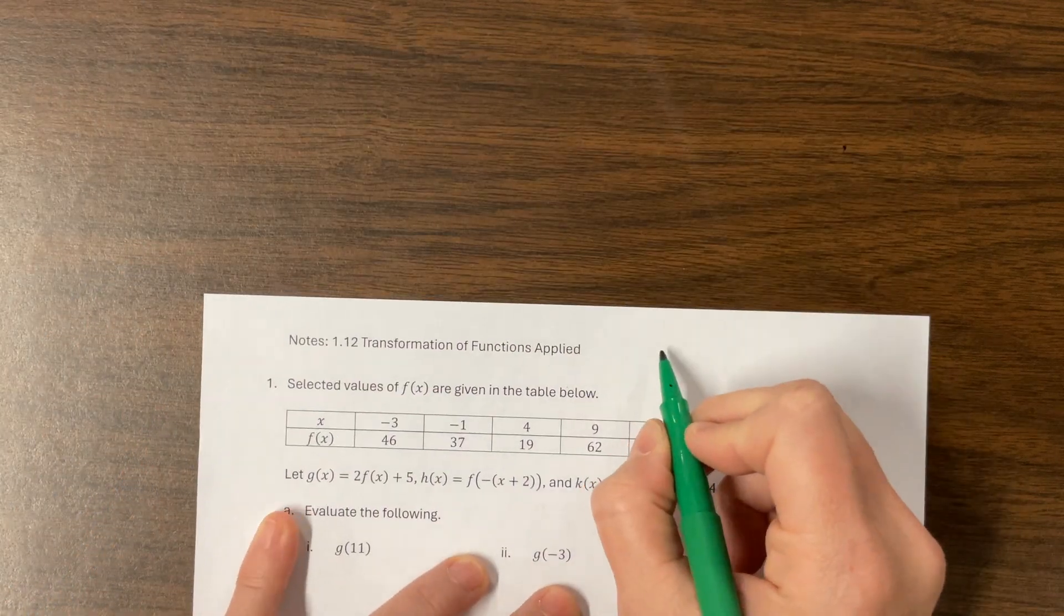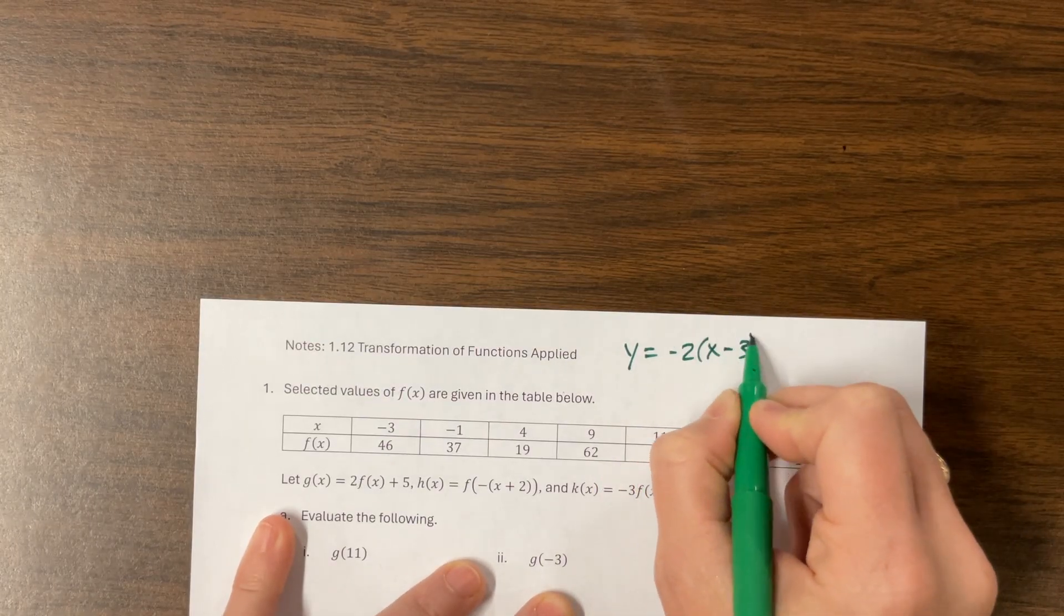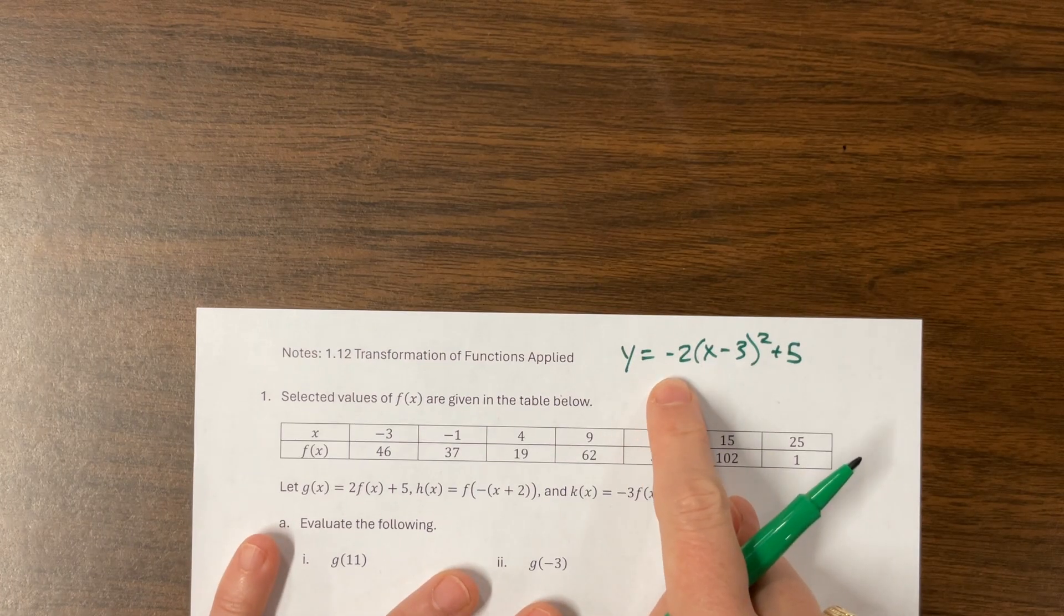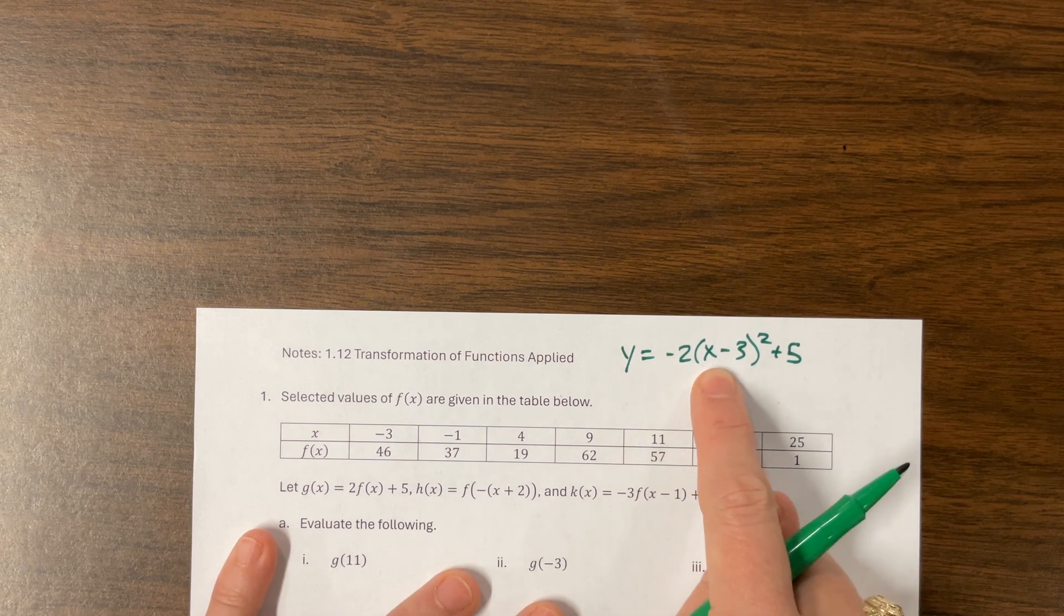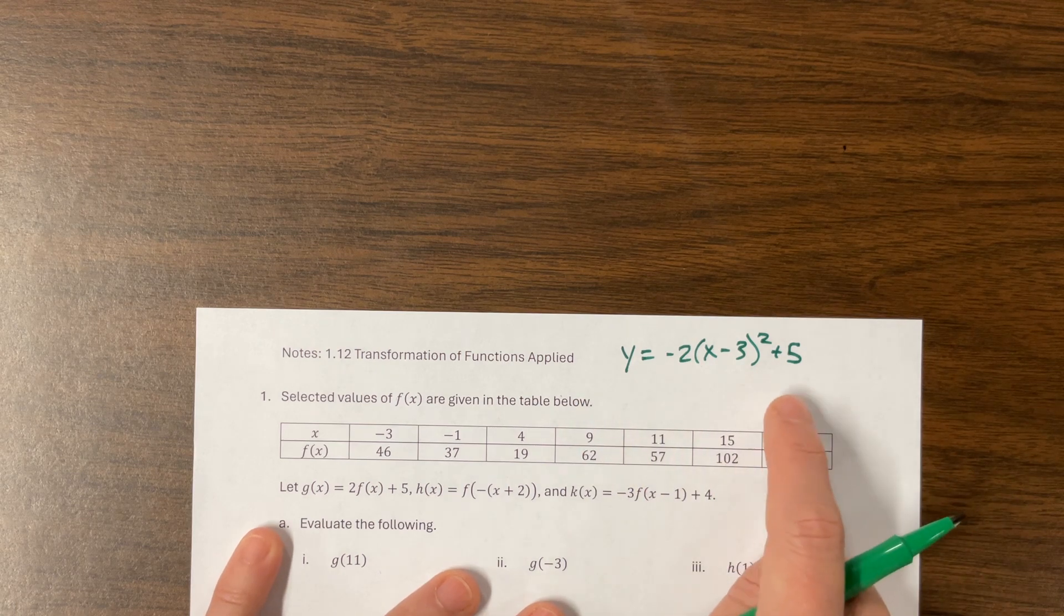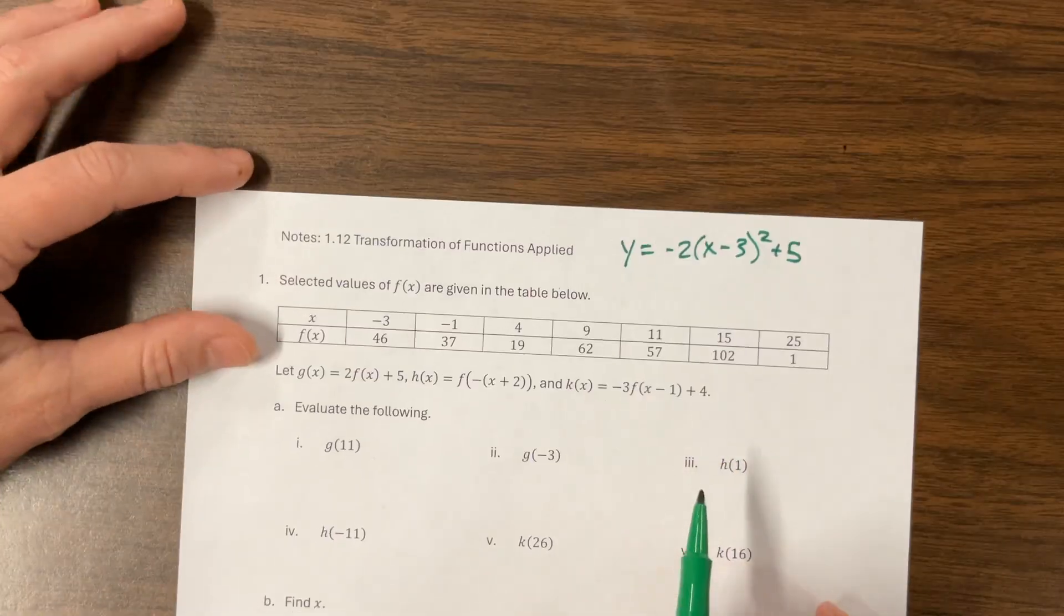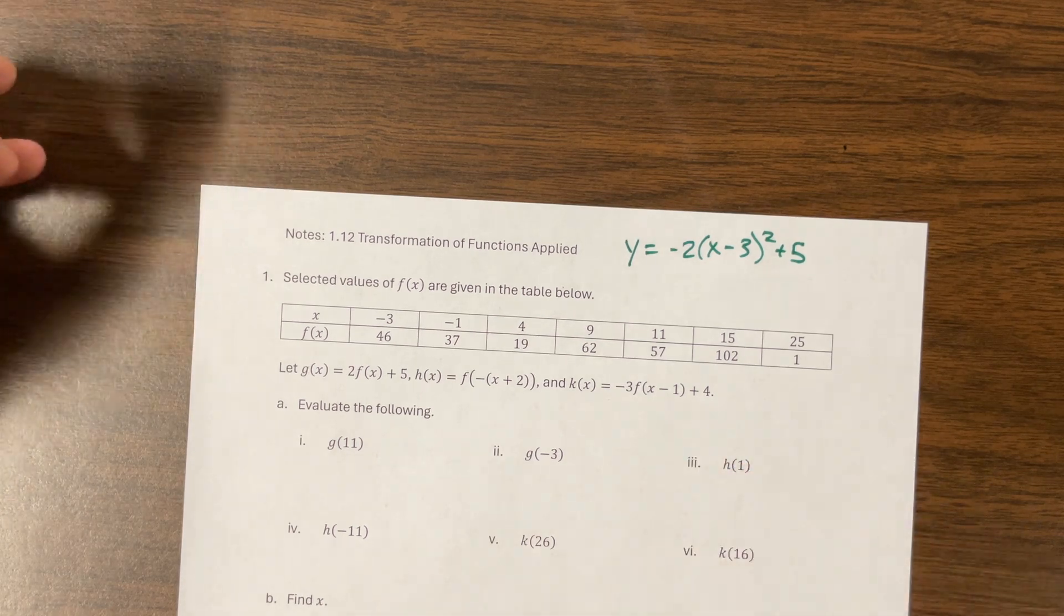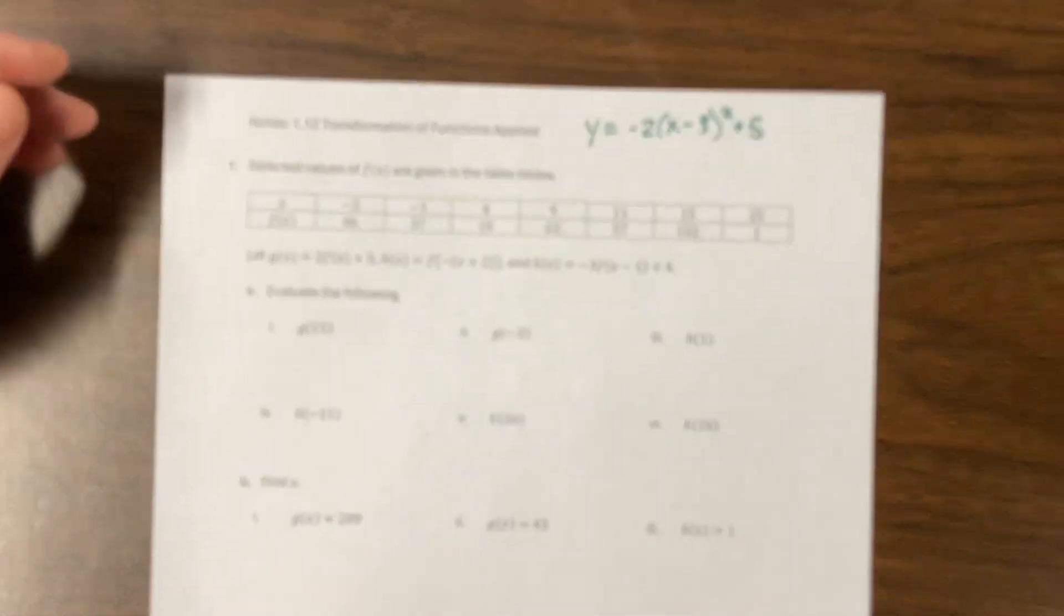I feel my students come to me with a very strong understanding of how to transform graphs and know how to interpret an equation. Like, my kids could tell me pretty consistently, if I had something like y equals negative 2 times x minus 3 squared plus 5, they'd know it was reflected over the x-axis. They'd know it had a vertical dilation by a factor of 2. They would know that it was shifted to the right 3 and up 5. And so they're pretty comfortable with that. And the first part of my notes dealt with, here's a graph, and now do the transformations.